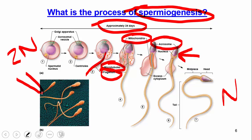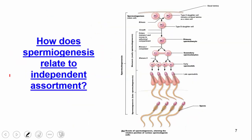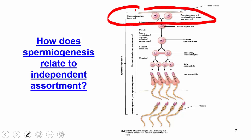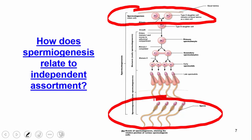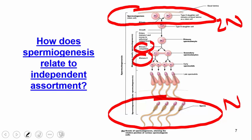Electron microscope images show actual sperm — you can count five sperm in one picture. The sperm is much smaller than a human egg. Regarding how spermiogenesis relates to independent assortment: we begin with a spermatogonium at 2N. Through meiosis I and then meiosis II, from one precursor cell we ultimately end up with four fully functional sperm at the N level.